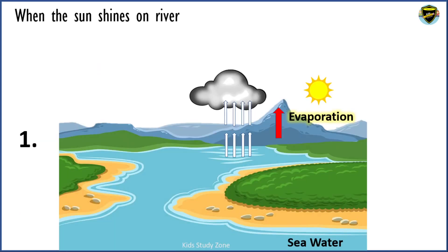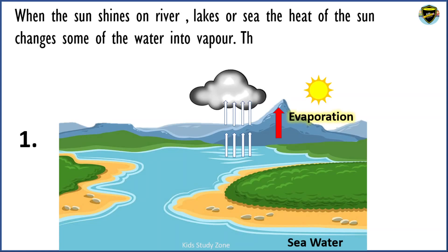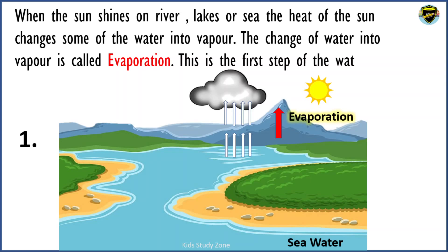When the sun shines on rivers, lakes or the sea, the heat of the sun changes some of the water into vapour. The change of water into vapour is called evaporation. This is the first step of the water cycle.